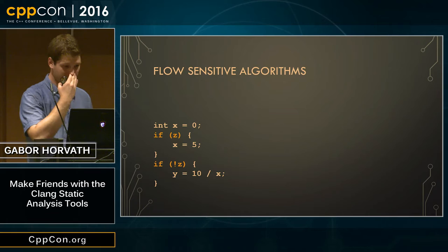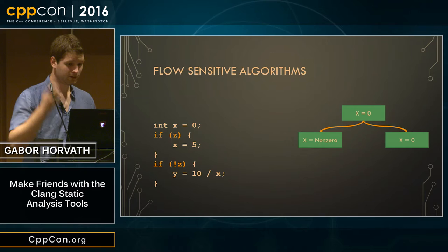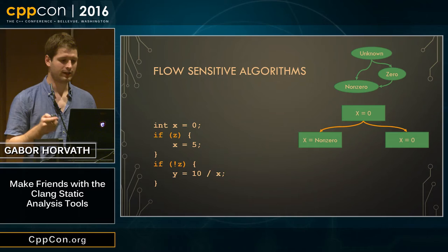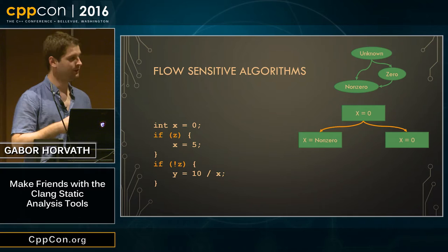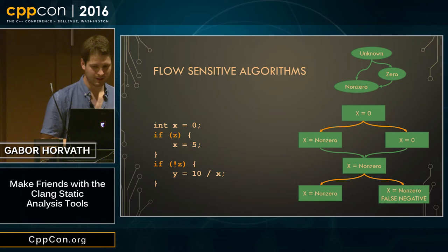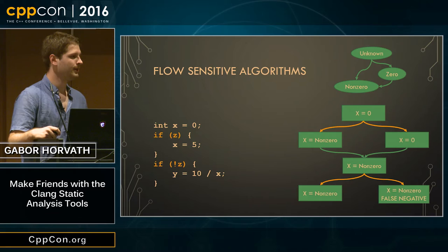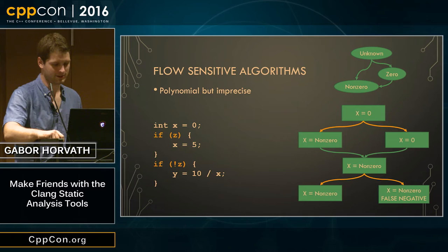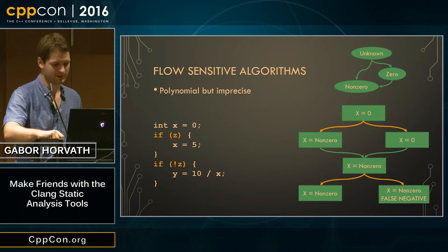To try to fix this, we can define the lattice differently: only conclude that x is zero if it is zero on all paths. But then we get a false negative — we miss the division-by-zero that actually happens. A flow-sensitive algorithm runs in polynomial time, which is great for speed, but it is very imprecise — we either have many false positives or many false negatives.